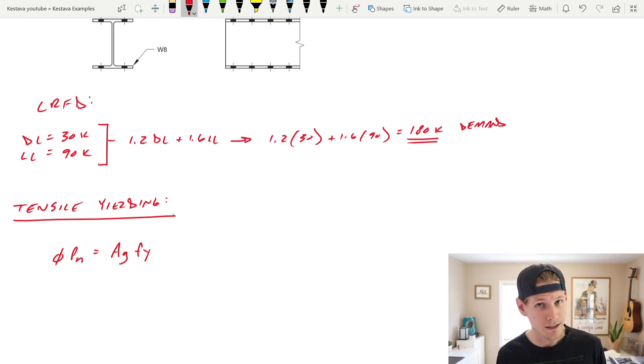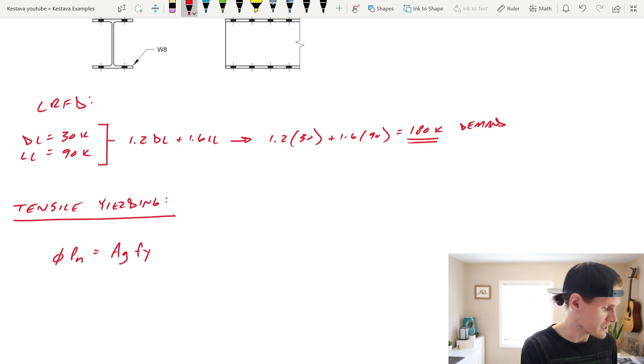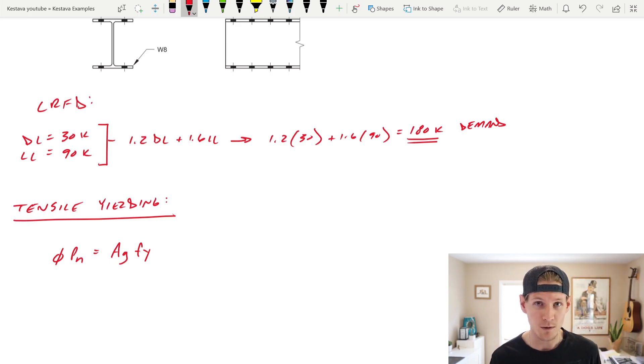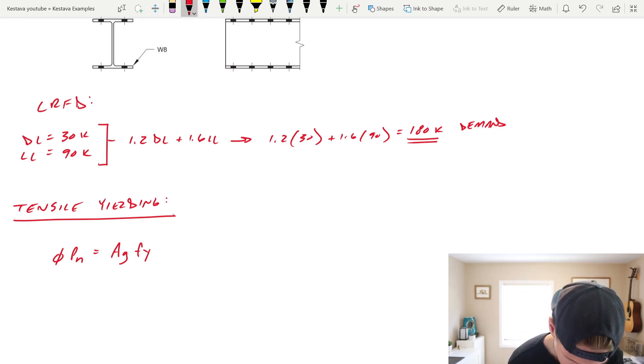AG is our gross area of our section of our wide flange and then Fy is our minimum yield stress. And for our wide flange to determine our material properties, we're going to go to table 2-4 in the steel manual. And you are going to see that typical wide flanges is A992 steel, which they did state in the problem. And that has a minimum yield stress, Fy equal to 50 ksi. And something else we're going to need, Fu, our minimum tensile stress of 65 ksi.